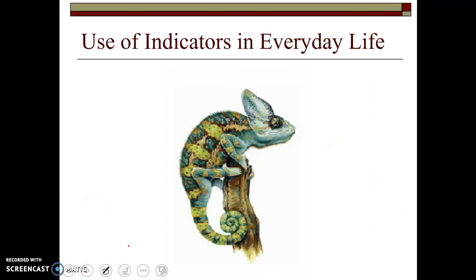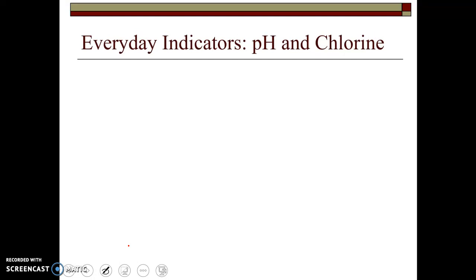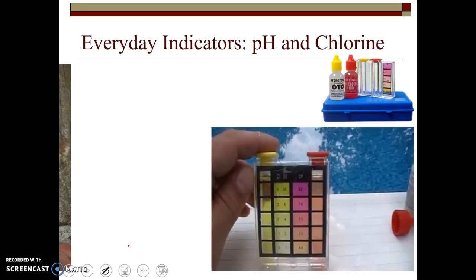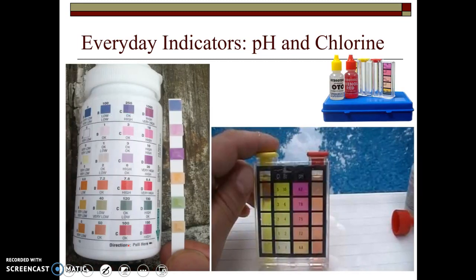Now, in addition to just acid-base indicators, indicators are something that we use for quite a few things in many different times in life. And one of the last questions on your lab sheet asks you to think of some times outside of chemistry class where you have used an indicator, a color indicator, something that will change different colors to indicate what kind of environment it's in. And hopefully some of you were able to come up with some of these examples.